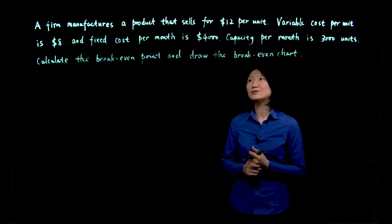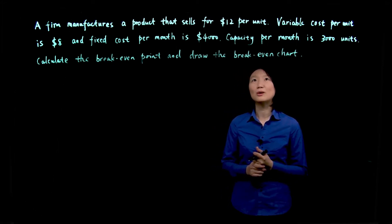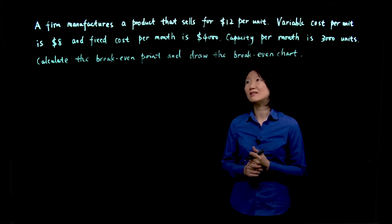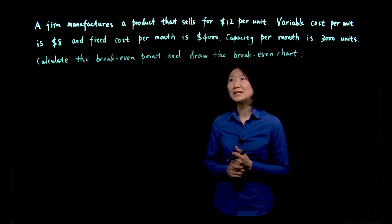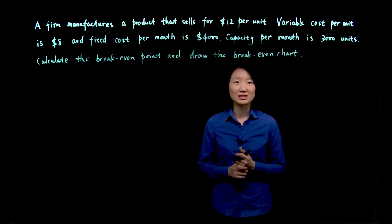A firm manufactures a product that sells for $12 per unit. Variable cost per unit is $8 and the fixed cost per month is $4,000. Capacity per month is 3,000 units. Calculate the break-even point and draw the break-even chart.